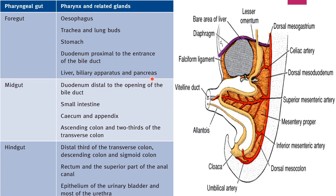In the foregut derivatives, starting from the esophagus till the hepatic bud or hepatic diverticulum — which is the area where the bile duct opens into the duodenum — these areas include the foregut-derived structures. The foregut has its own blood vessel, the celiac artery, and around it is the celiac plexus supplying autonomic innervation to the foregut areas.